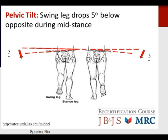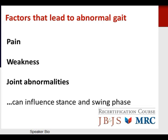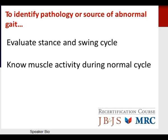Pelvic tilt is a basis of gait — the swing leg drops five degrees below the opposite side during mid-stance. Factors that lead to abnormal gait can include pain, weakness, and joint abnormalities, which can influence stance and swing phase aspects of gait. To identify pathology or a source of abnormal gait, one must evaluate both the stance and swing phases and have an understanding of muscle activity during a normal cycle.